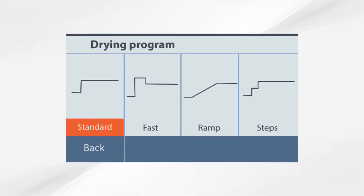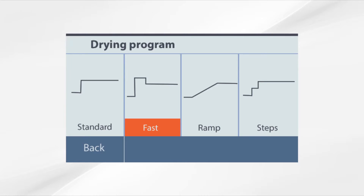The Standard Drying Profile is the most commonly used setting. The moisture balance will heat up to the target temperature and hold throughout the test. The Fast Drying Profile is ideal for samples with high moisture content. The target temperature is exceeded by 40% for the first three minutes, then reverts to the target temperature, which is sustained until the end of the measurement.